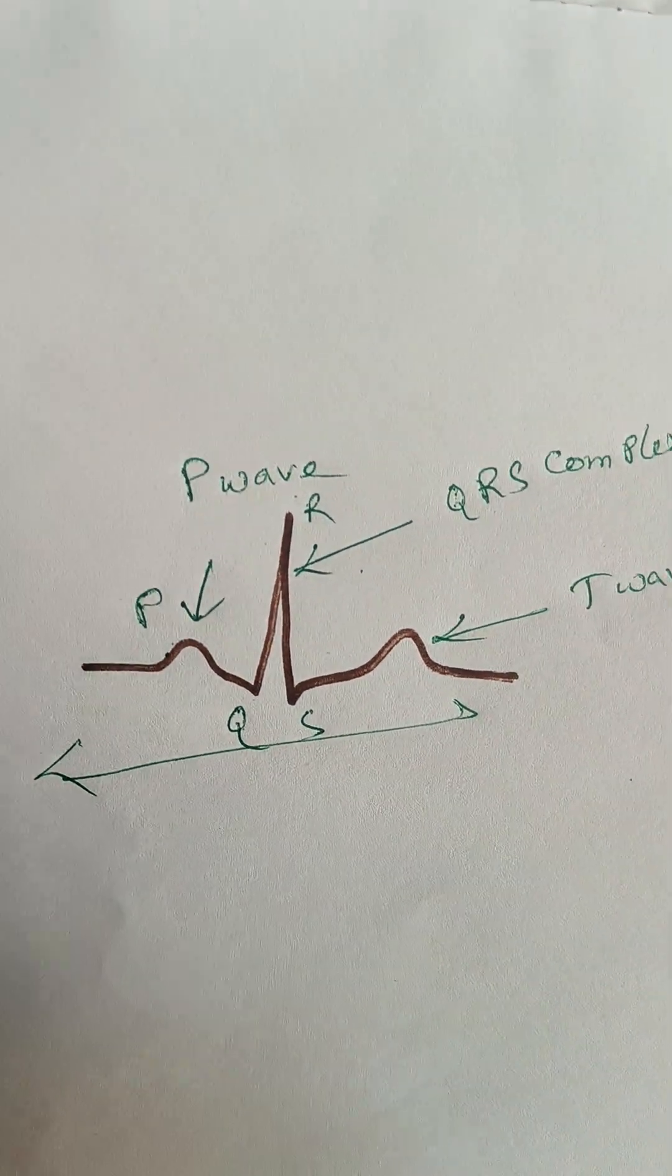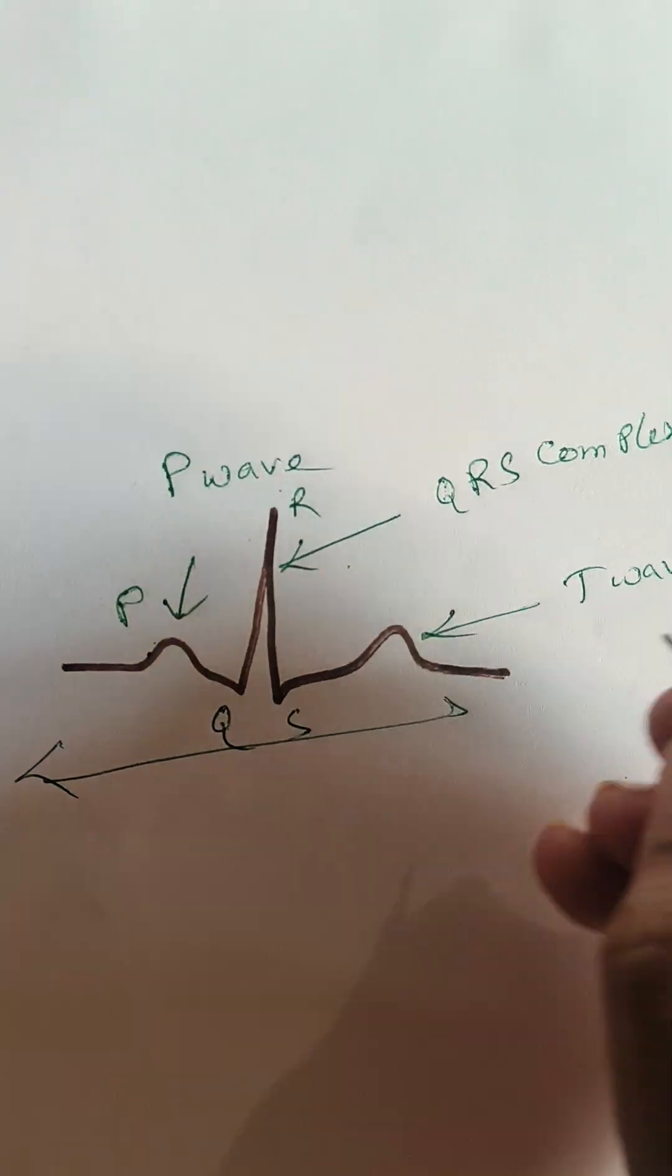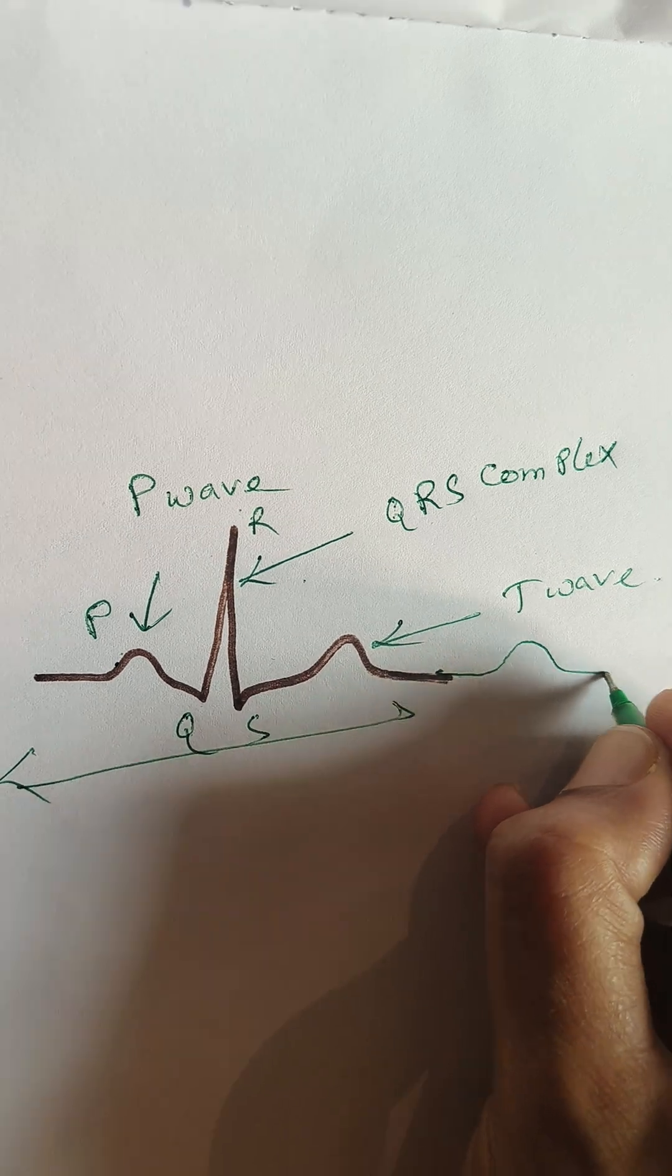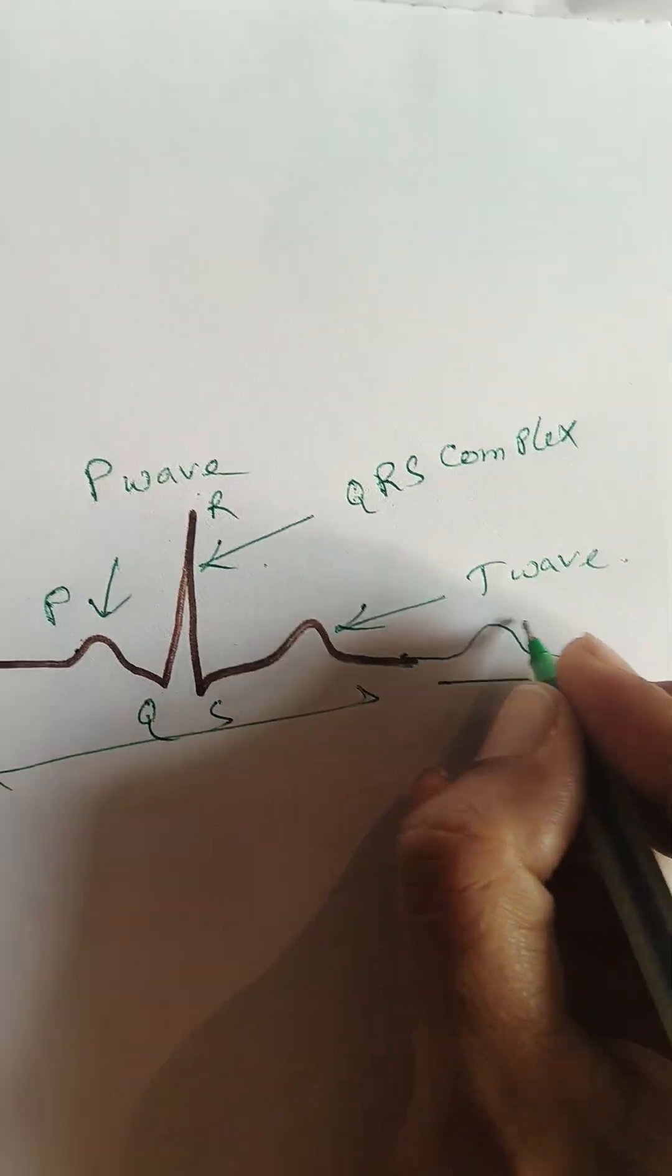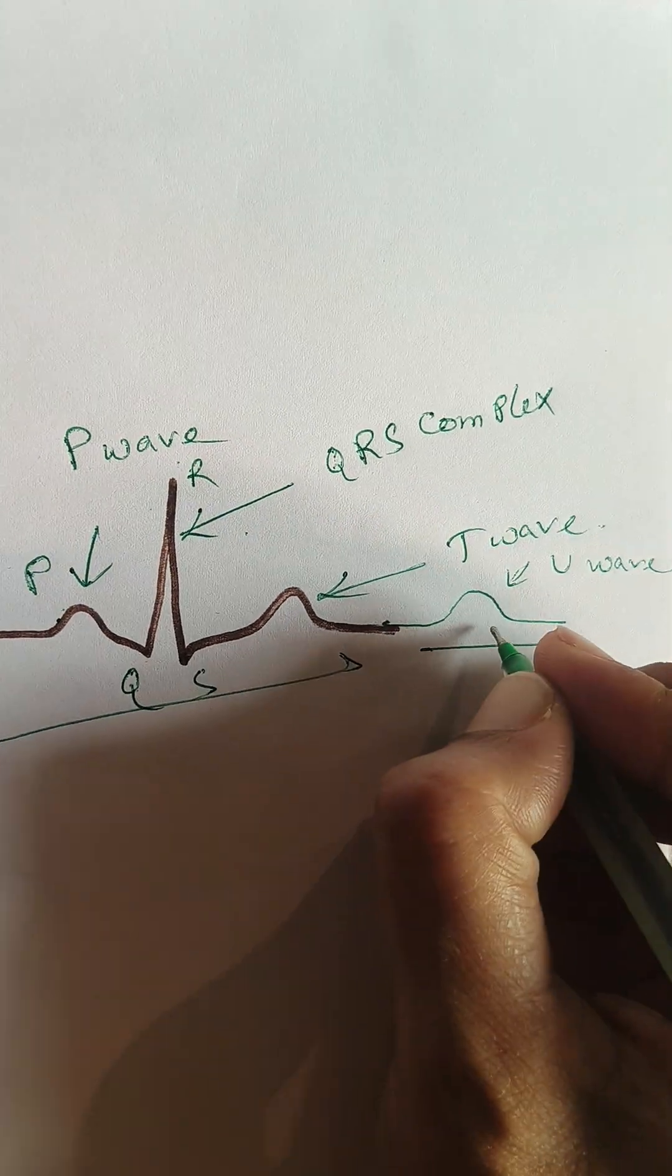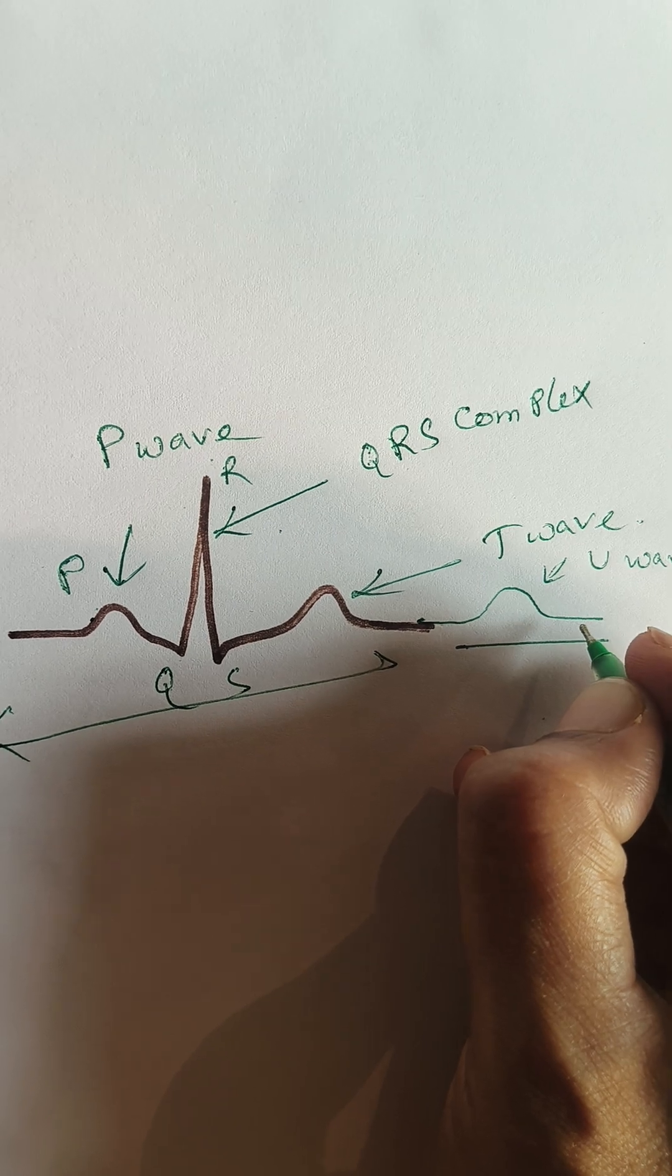So sometimes after the T wave there can be a U wave. You can see there can be a U wave. So this U wave can be generated due to hypokalemia, due to the lack of or decreased potassium in the blood.